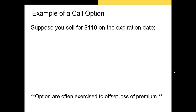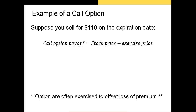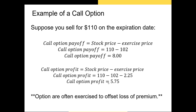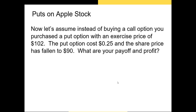Now suppose the share price of Apple stock rises from $100 to $110 on the expiration date. Your payoff is the stock price minus the exercise price: $110 minus $102 equals $8. Your profit is $8 minus the $2.25 premium, equaling $5.75. In this case it makes sense to exercise the option, and your profit is $5.75 per share.